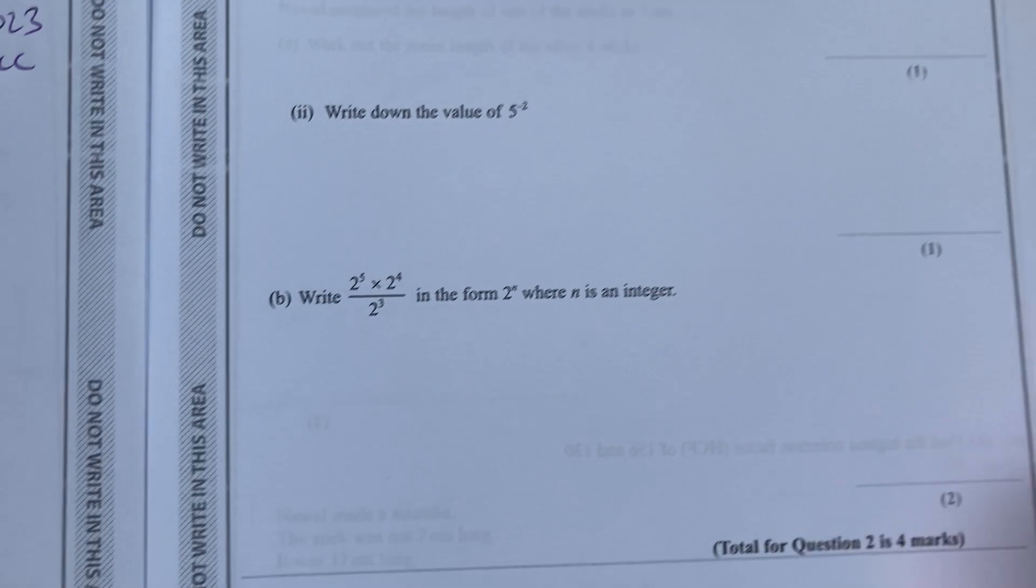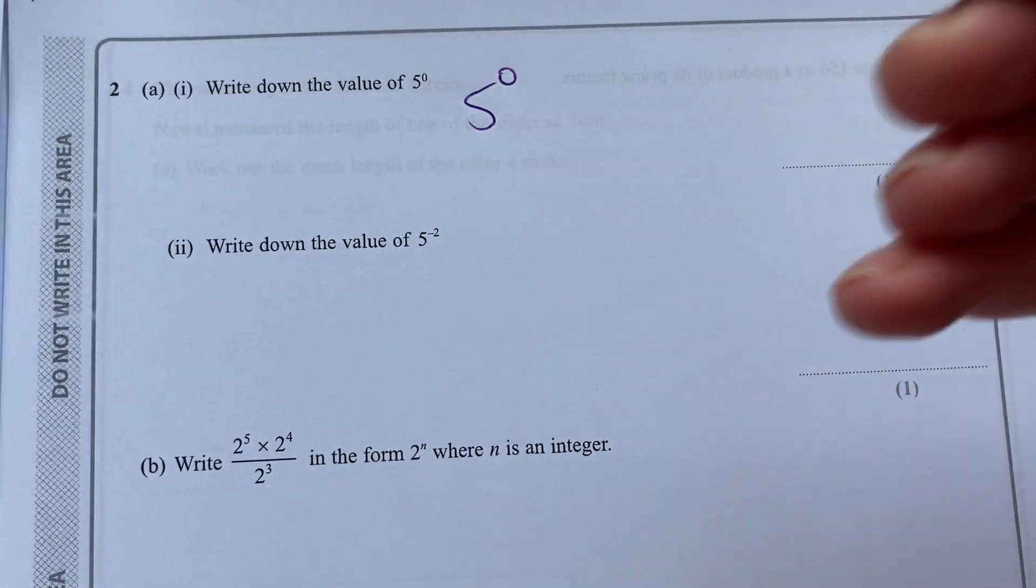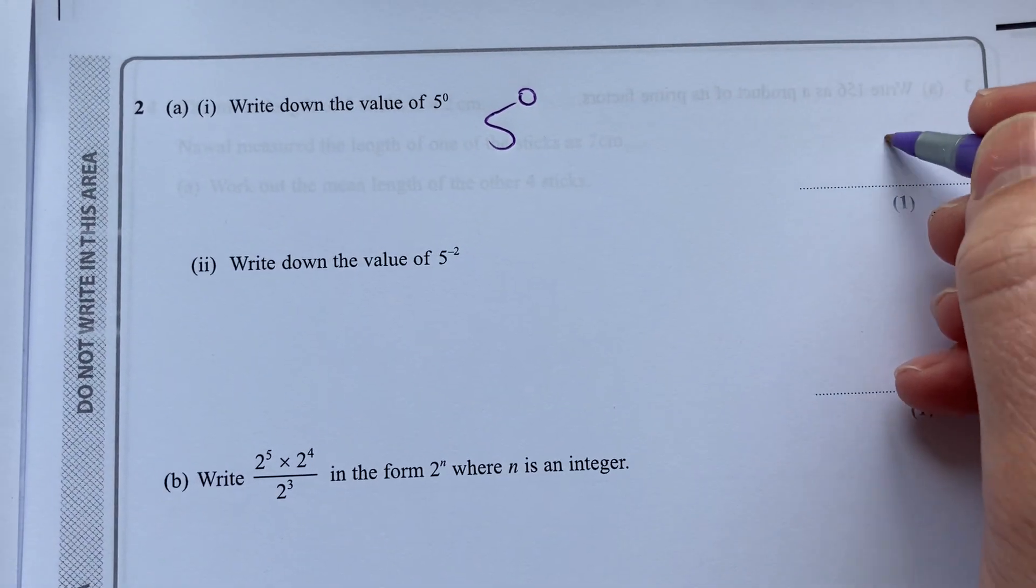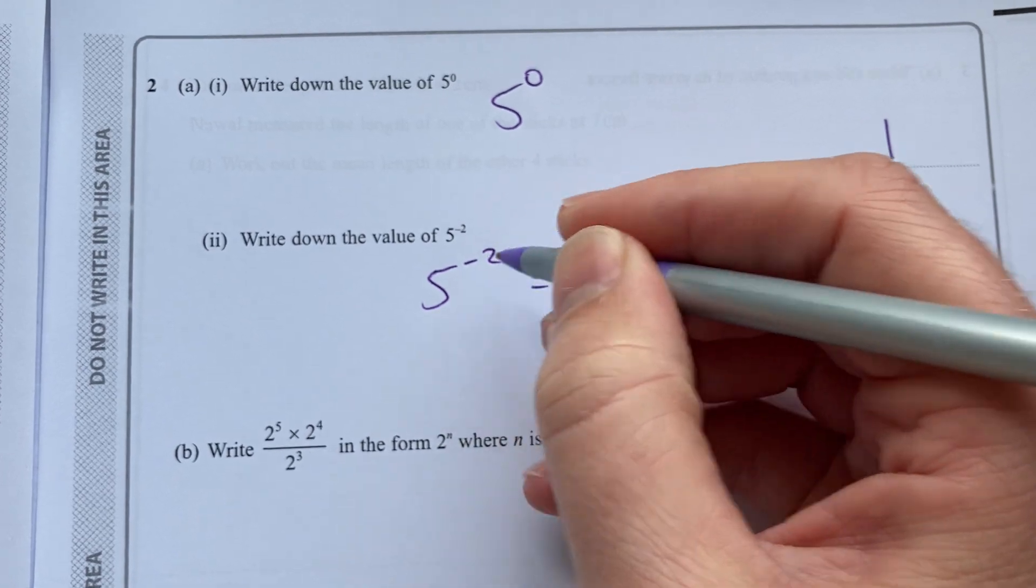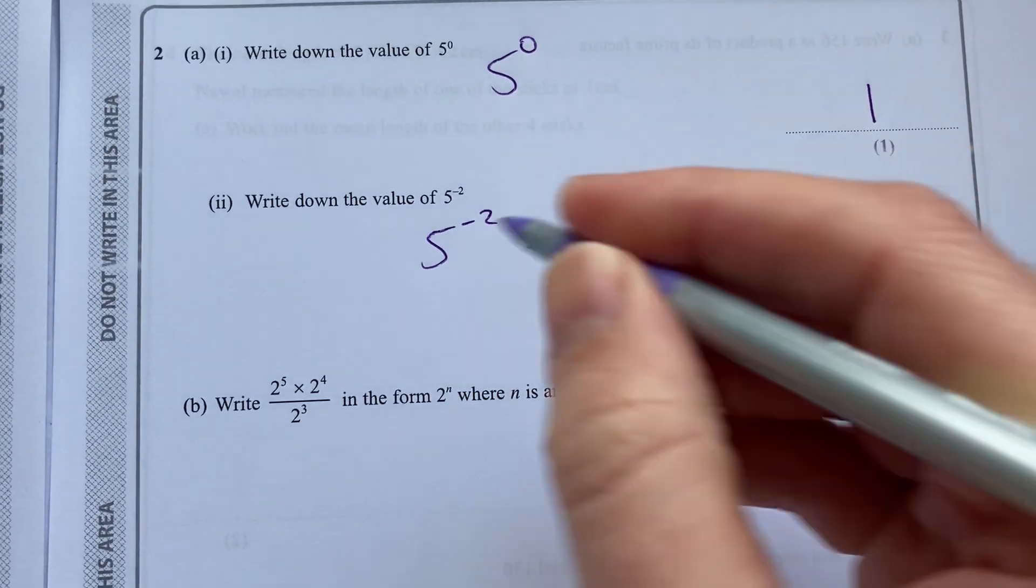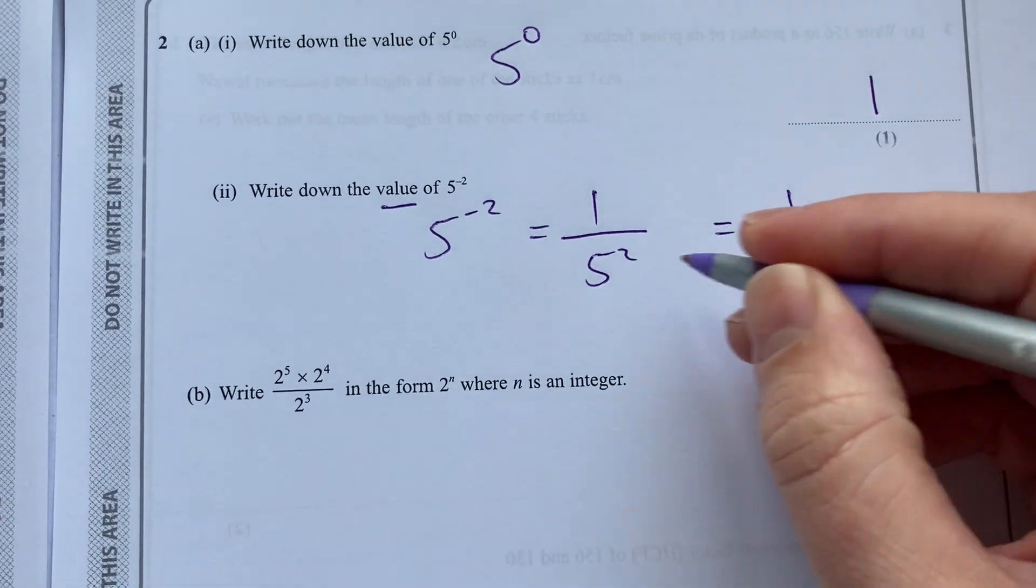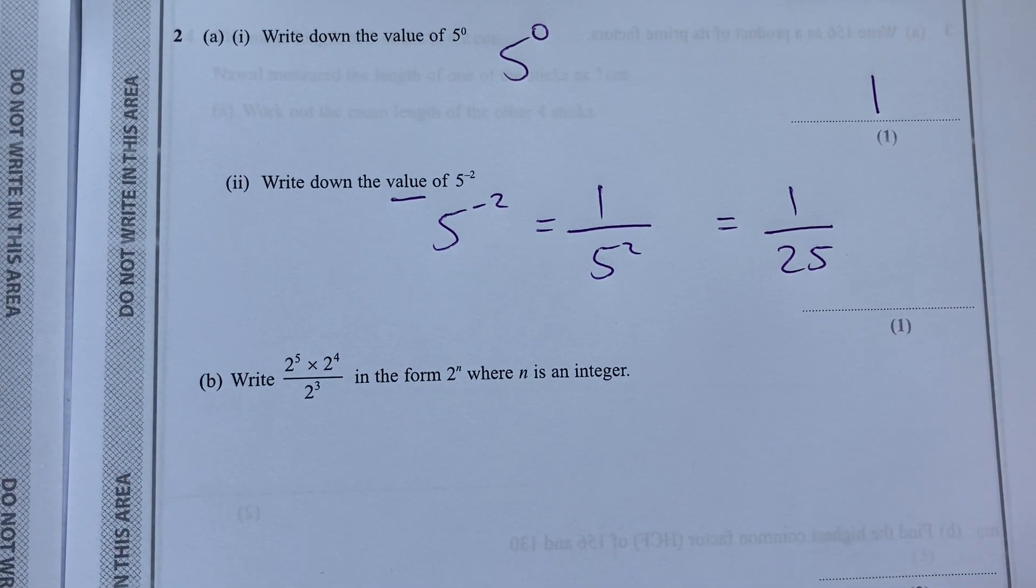Let's move on to question 2. Write down the value of 5 to the 0. Remember, anything to the 0 is simply 1. 5 to the minus 2, it's a negative power. We can do the reciprocal. And because they want to see the value of it, we must do 5 squared, 1 over 25. They're each worth 1 mark.